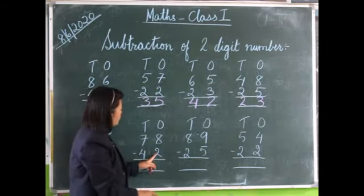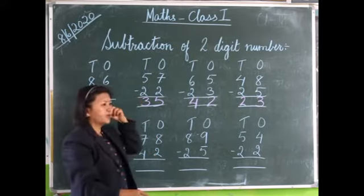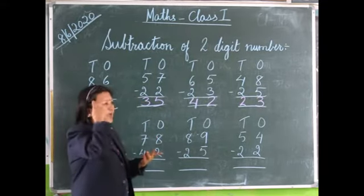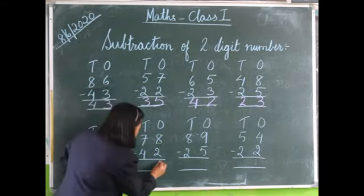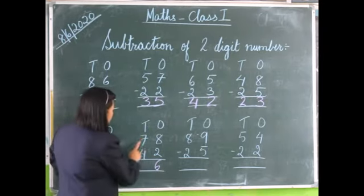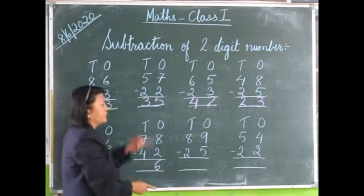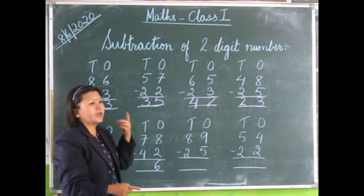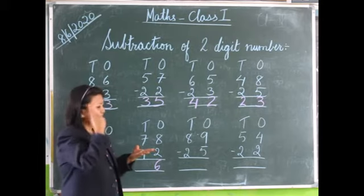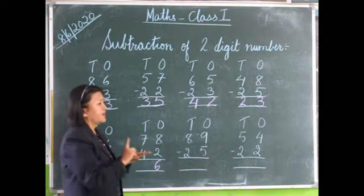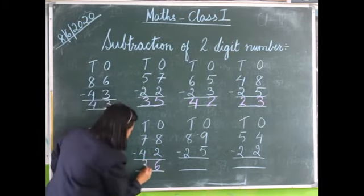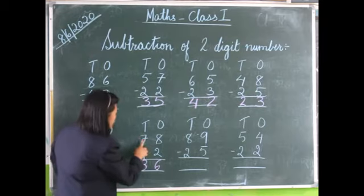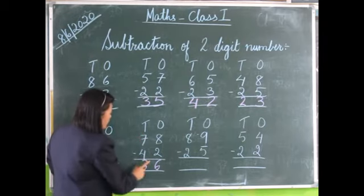Eight minus two. Eight on the head, two in our fingers. We count backwards: eight, seven, six. Now seven minus four. Seven on the head, four in our fingers. We count backwards: seven, six, five, four, three. Therefore, 78 minus 42 is equal to 36.